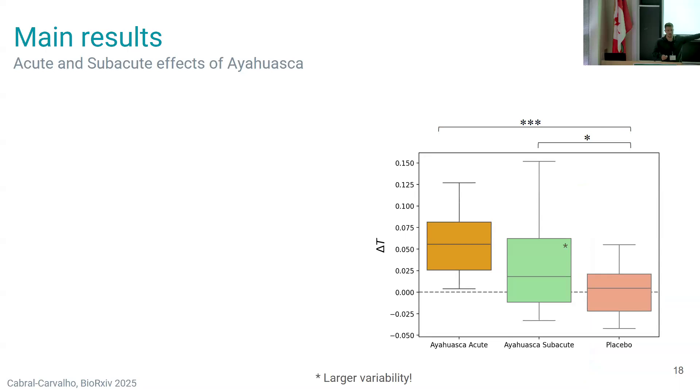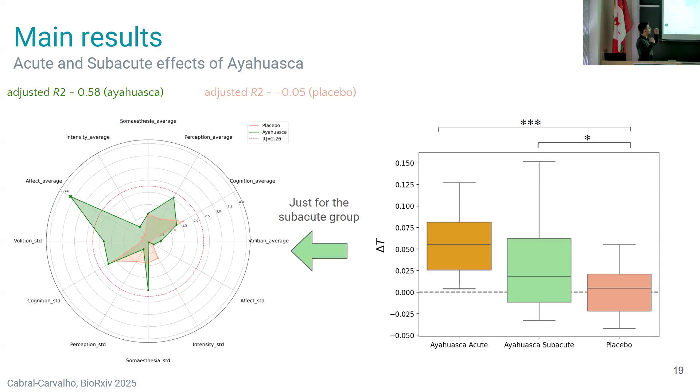The difference of the temperature, which basically means the condition minus the baseline. The placebo group we actually expect Gaussian closer to zero because there is no significant increase in your brain entropy in the placebo condition. However, in the subacute one we actually see a slight increase even one day after, even if the substance is not in your body anymore. The acute group, of course, every one of them are above zero.